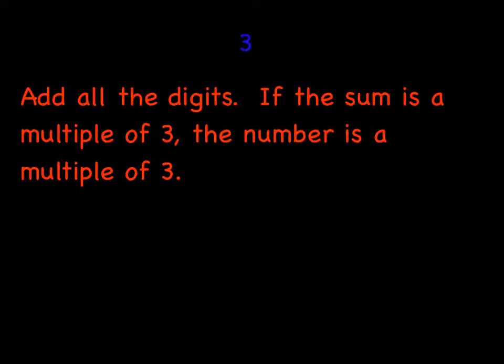Easy enough? Well, three gets a little tricky, but not too bad. First of all, whatever the number is, go ahead and add up all the digits. If the sum is a multiple of three, then that number is also a multiple of three, which means three is a factor. Here's what that looks like.